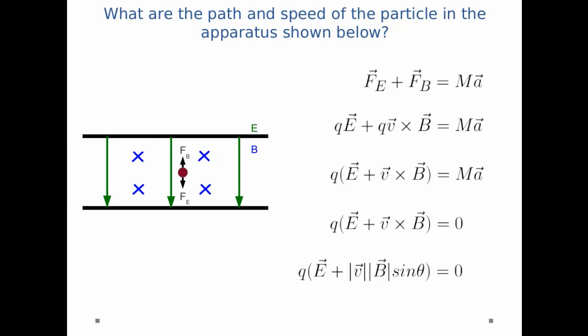So q times E plus vB sine theta equals zero. That's because since the particle is not deflecting in any weird way, we can simplify our cross product.